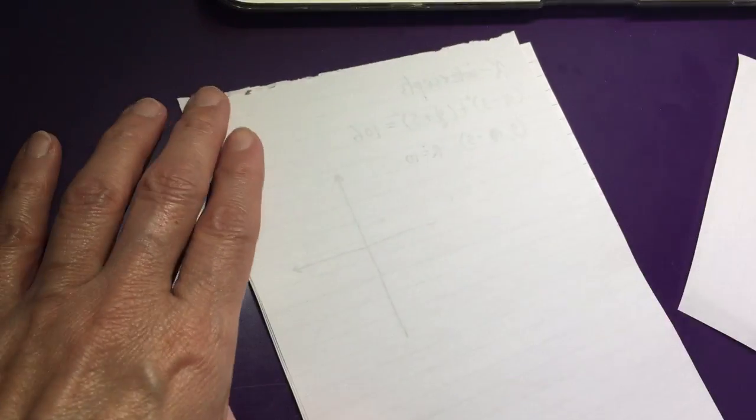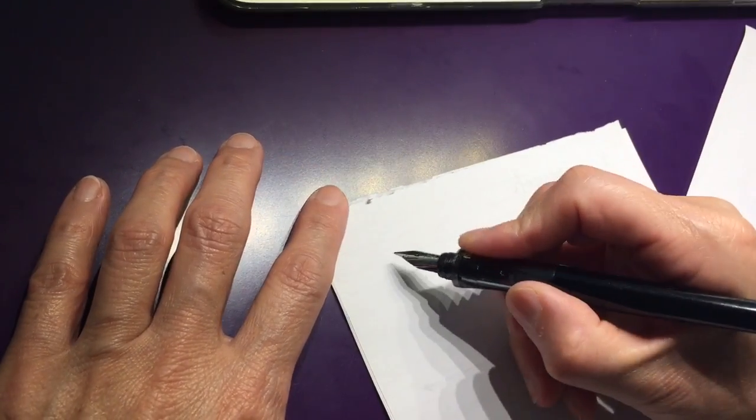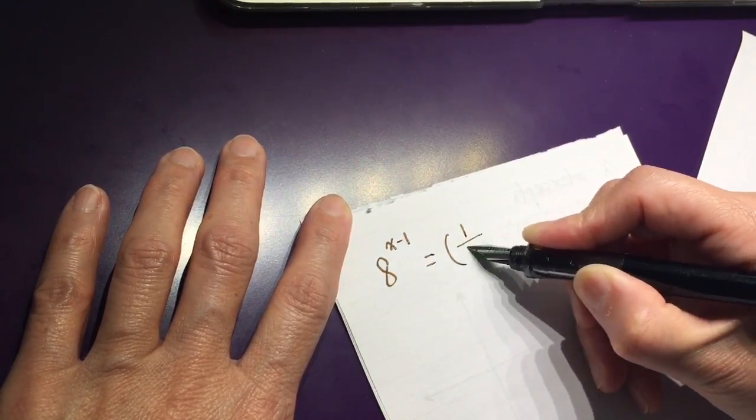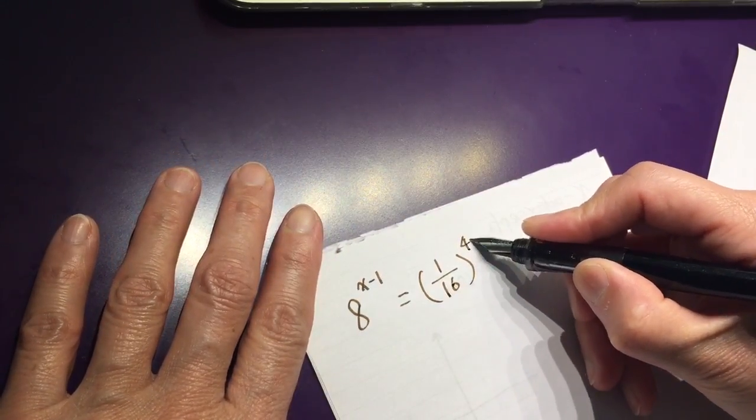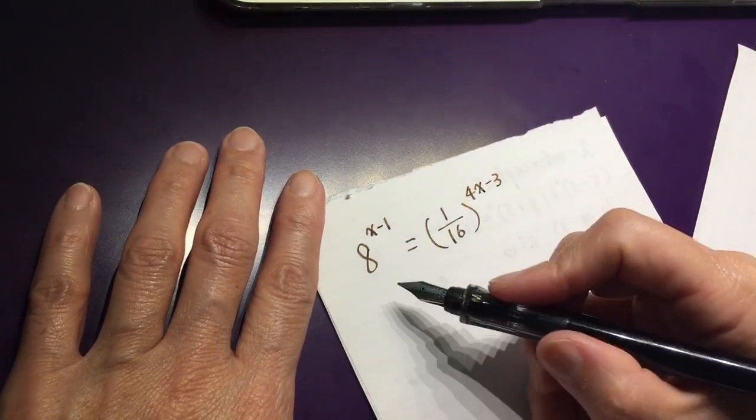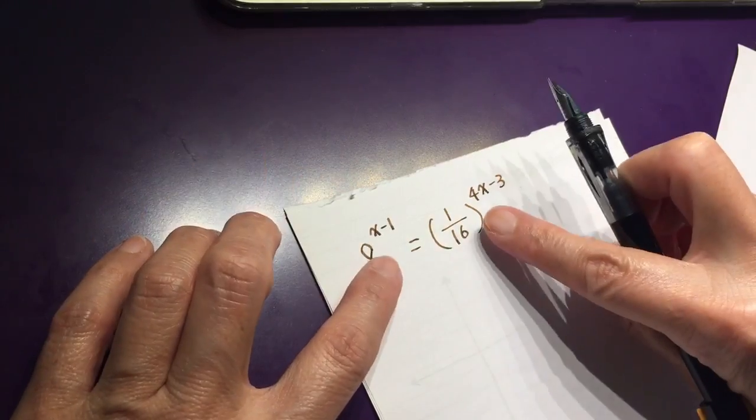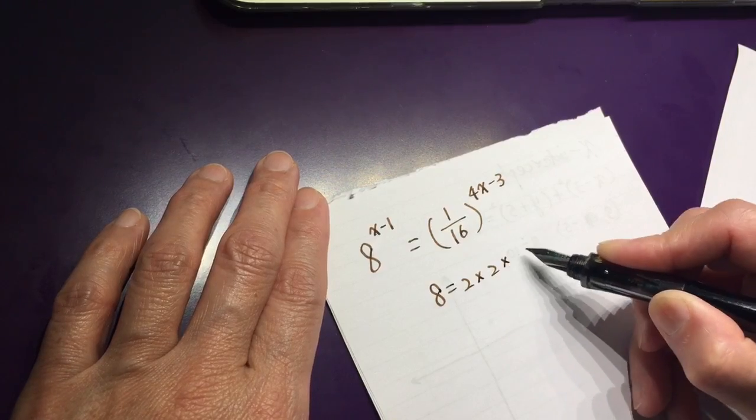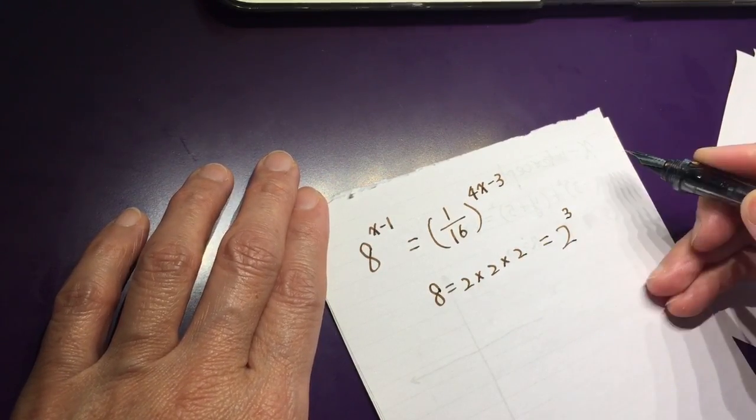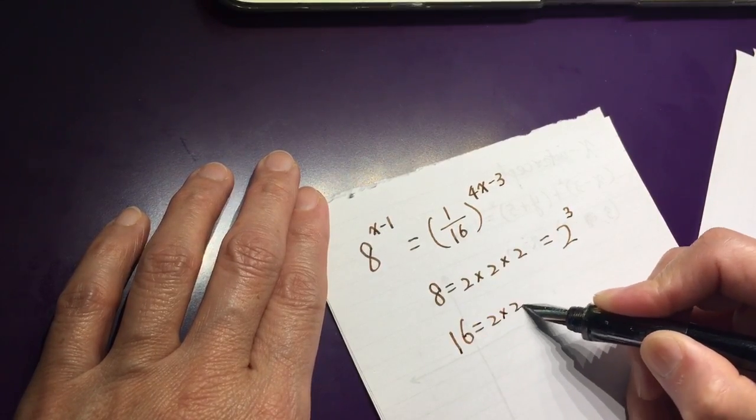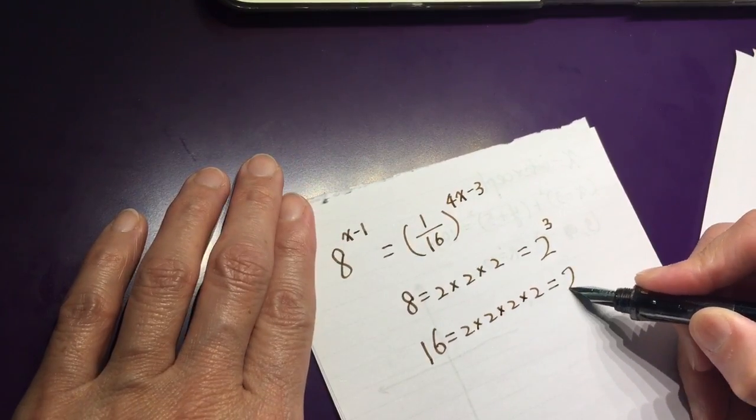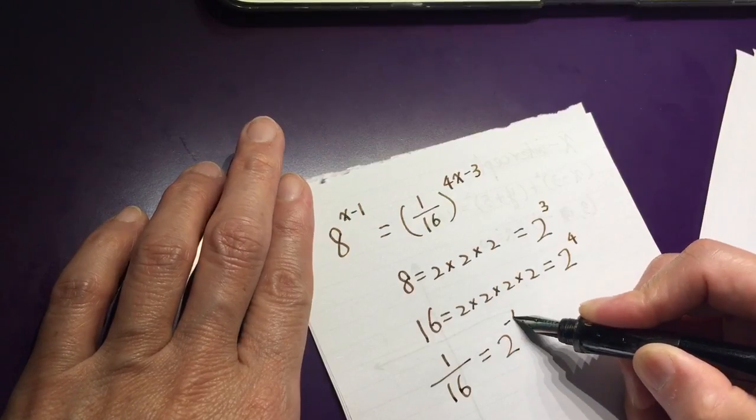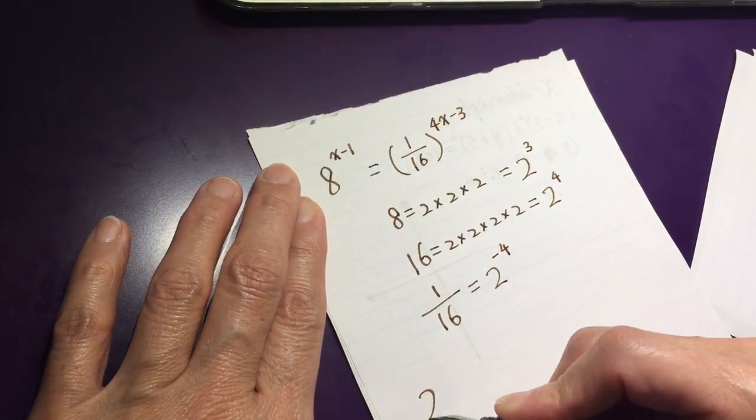To make sure we know this solidly, we do another problem. 8 to the power of x minus 1 equals 1 over 16 to the power of 4x minus 3. Now we need to find the commonality between the base. 8 related to 2. 8 equals 2 times 2 times 2, so 2 to the power of 3. 16 equals 2 times 2 times 2, so 2 to the power of 4.